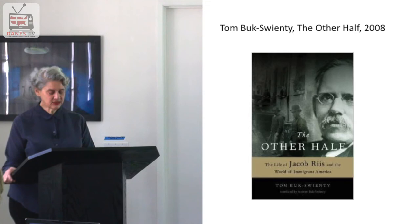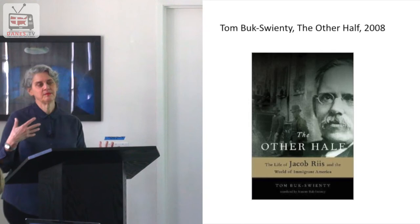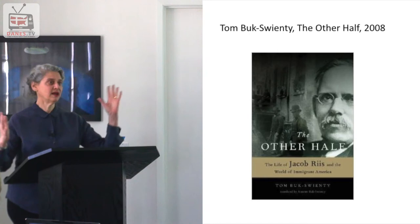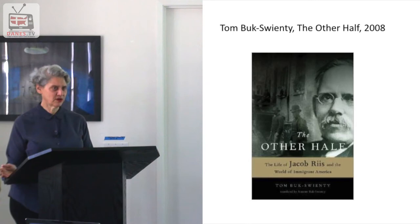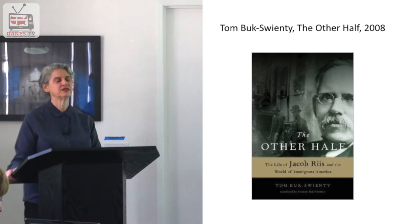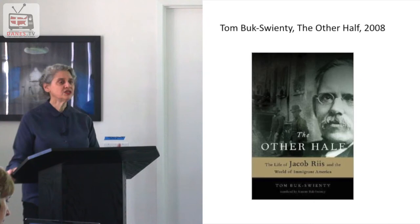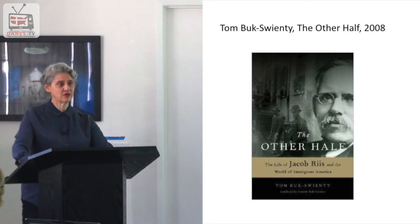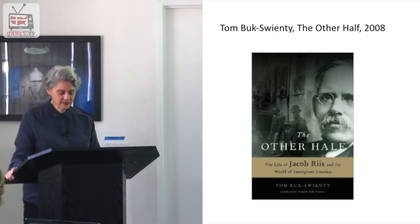Feeling the ineffectiveness of his writing to affect change, in 1887 Riis read about a new discovery: flashlight photography, a German invention that would allow a flash of light to occur simultaneous with the exposure of a photographic negative, making it possible to photograph in dark places. He had a eureka moment — this was going to make the difference. He had no intention of becoming a photographer himself; he reached out to a friend at the board of health who knew some amateur photographers at the Society of Amateur Photographers of New York.